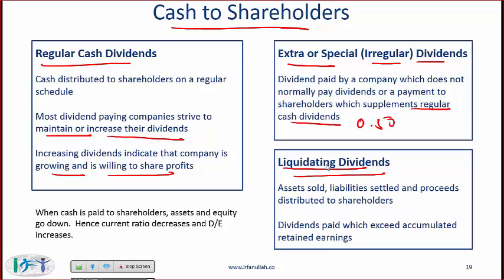The final category is a liquidating dividend, where in a worst-case scenario a company is shutting down — it settles its liabilities and then pays what is left to shareholders. Even in situations where the dividend paid exceeds accumulated retained earnings, that is also called a liquidating dividend, because the company is then eating into its own equity.